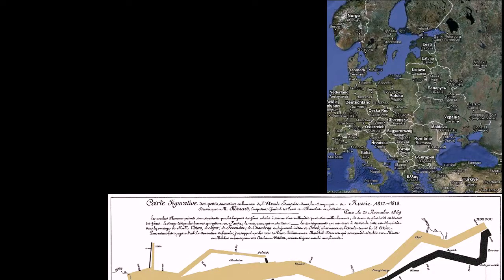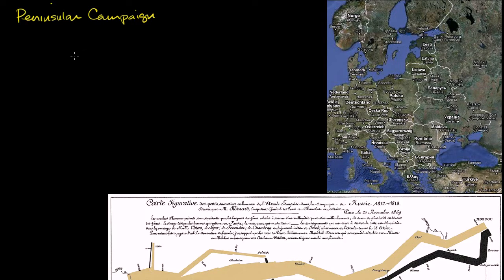In the last video, I talked about the two campaigns that eventually led to Napoleon's downfall. One of those was the Peninsular Campaign, where Napoleon and the French Empire had to waste a significant amount of resources fighting and trying to hold Spain. And the other, almost more direct catalyst for the fall of Napoleon, was his invasion of Russia. This is easily one of the top five most famous military campaigns in all of history.